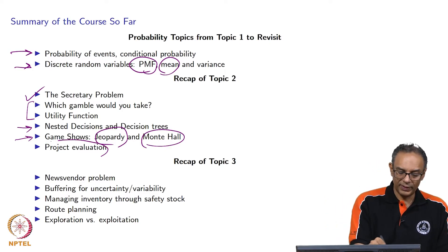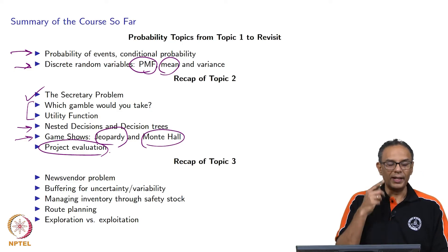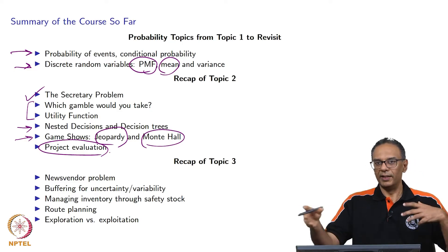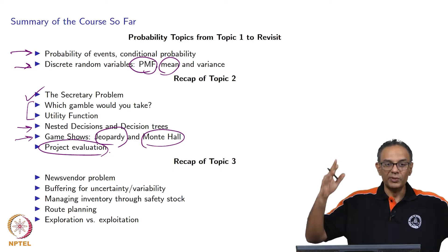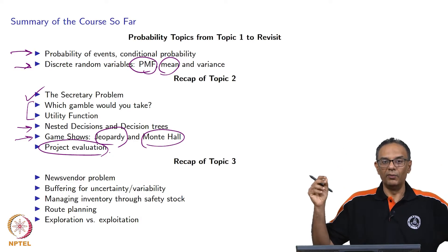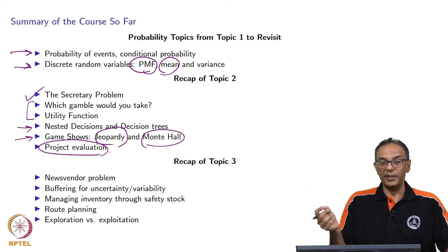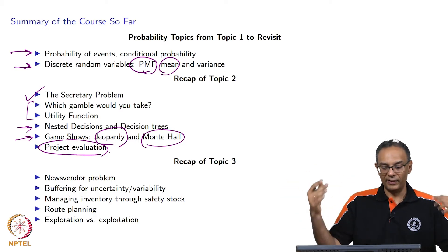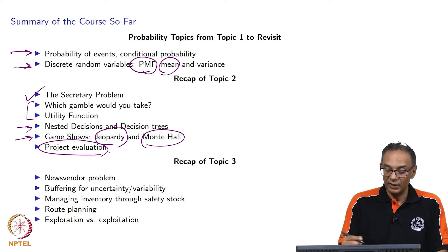We went into PERT — project evaluation — a little bit. Although that was a set of activities done sequentially, you still had one decision to make: how long it is going to take to complete the project, so that you could tell your customer when they could come and pick up what they were looking for.